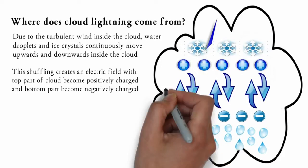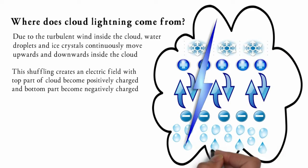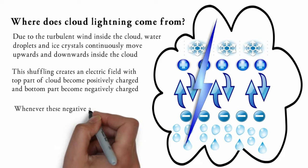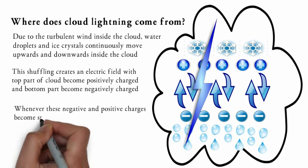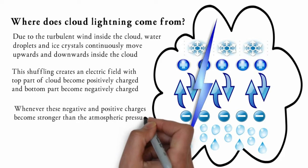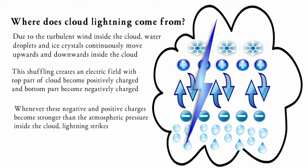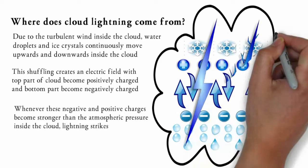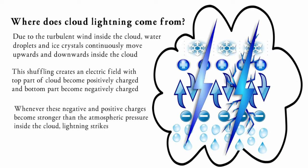Due to this electric potential, lightning strikes within the cloud. The electric field with both positive and negative charged particles is always looking to release this charge with the easiest path available. Whenever these negative and positive charges become stronger than the atmospheric pressure inside the cloud, lightning strikes. This is why we see lightning inside or within clouds.